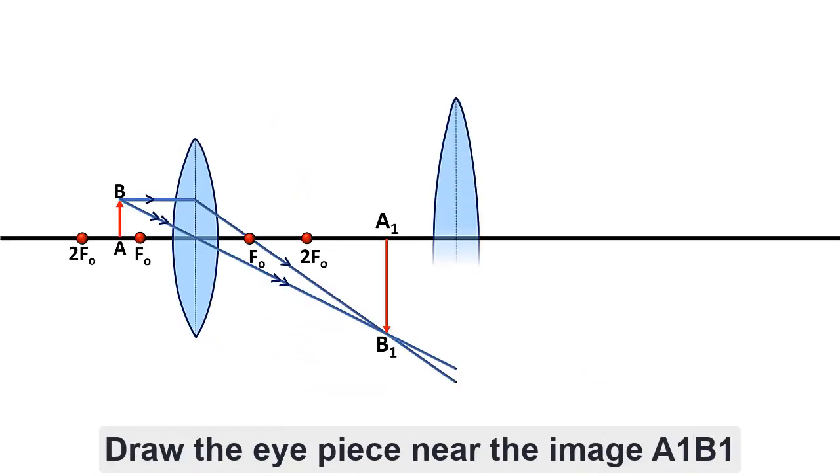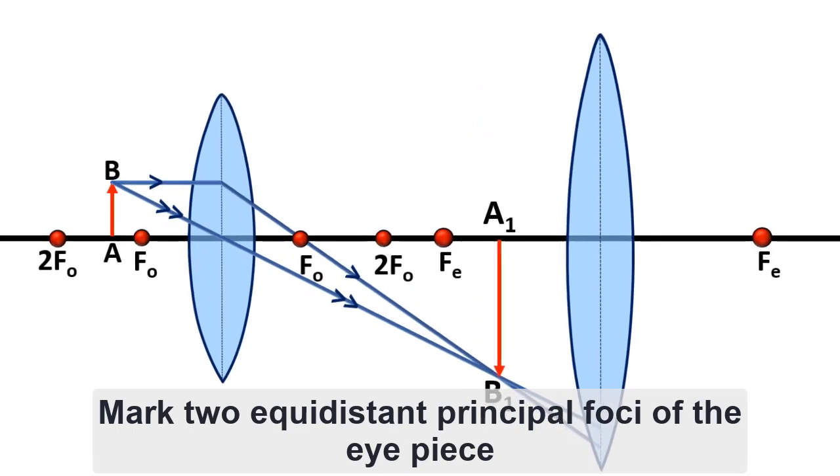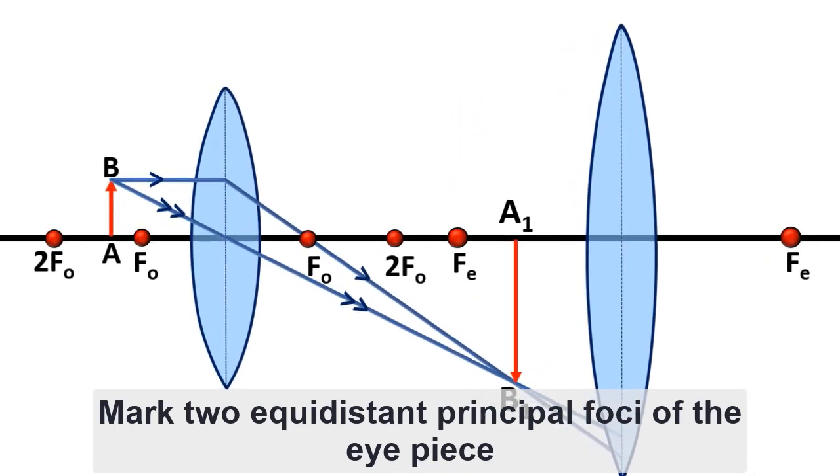Now draw the eyepiece near the image A1B1. Mark two equidistant principal foci of the eyepiece such that the image is in between Fe and eyepiece.